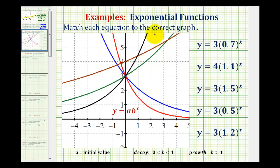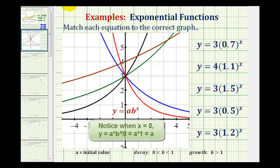We want to match each equation to the correct graph. Notice all the equations are in the form a times b to the power of x, which means they're all exponential functions. For a quick review, a is called the initial value, meaning the function value when x is equal to zero. So a would also be the y-intercept of the function.